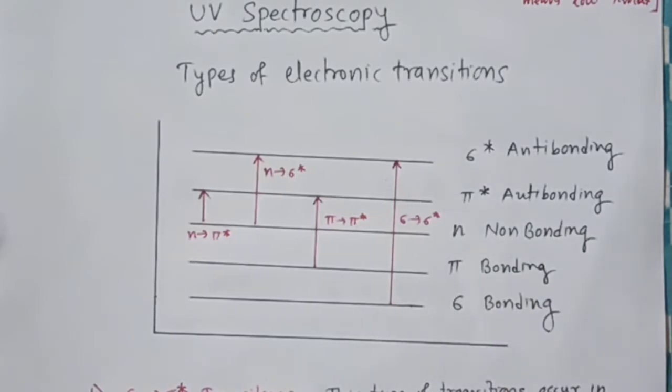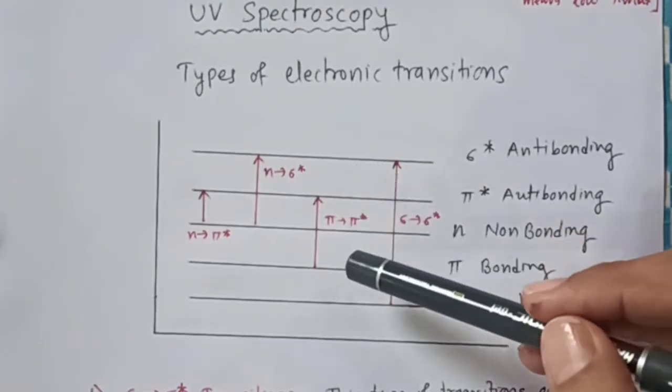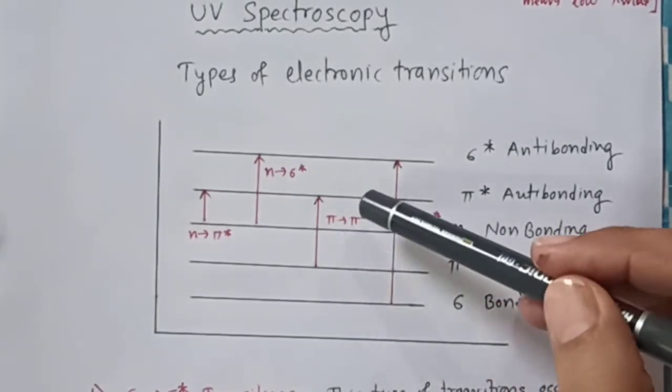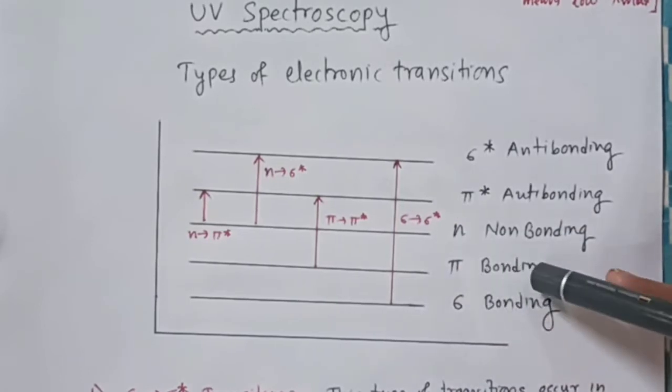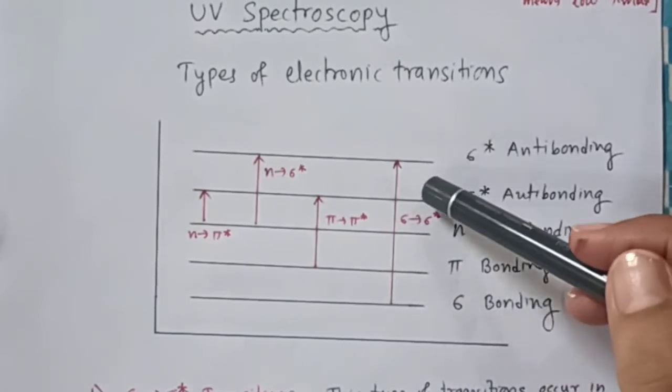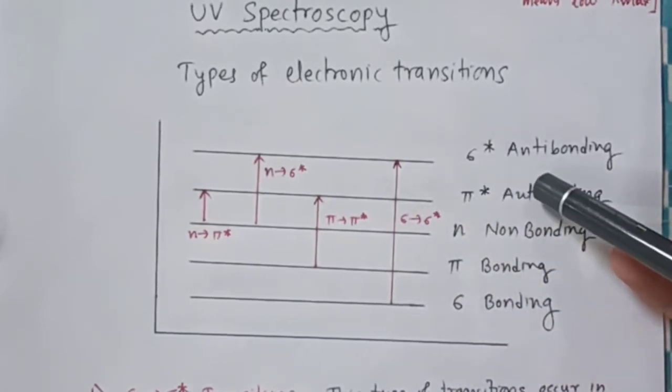The second type of transition possible is pi to pi star — that is, from the pi bonding molecular orbital to the pi star anti-bonding molecular orbital.